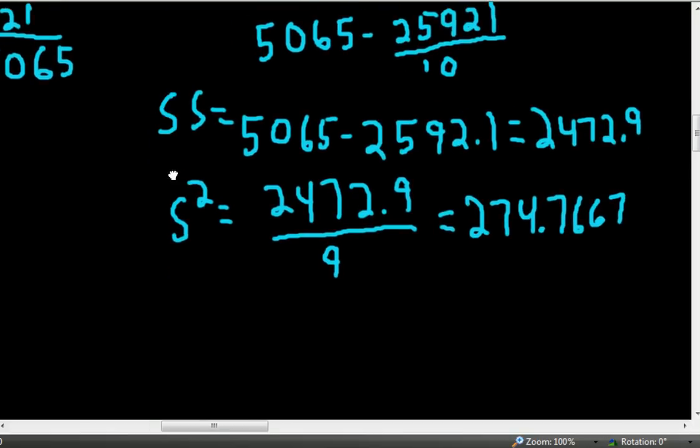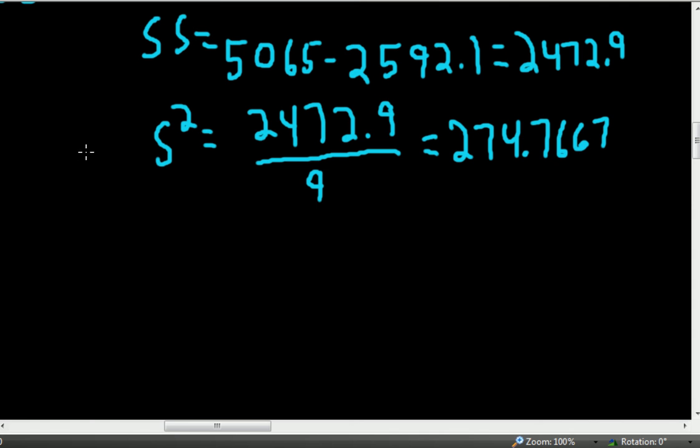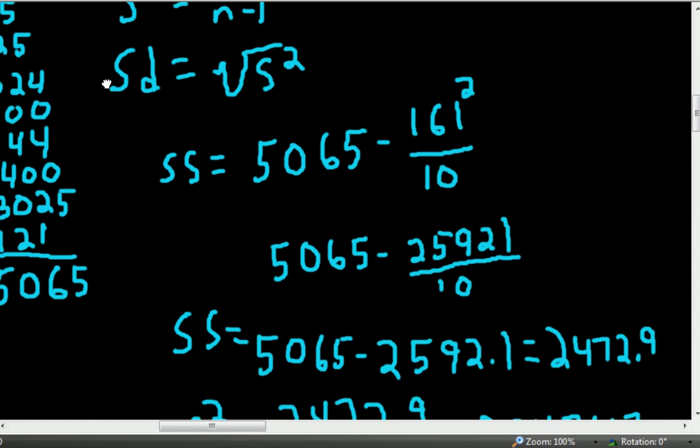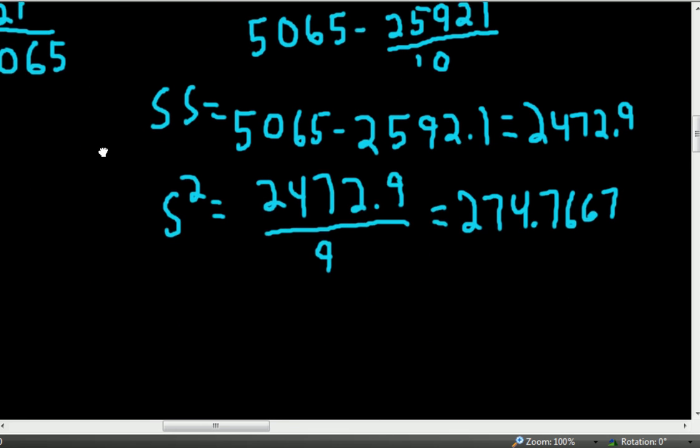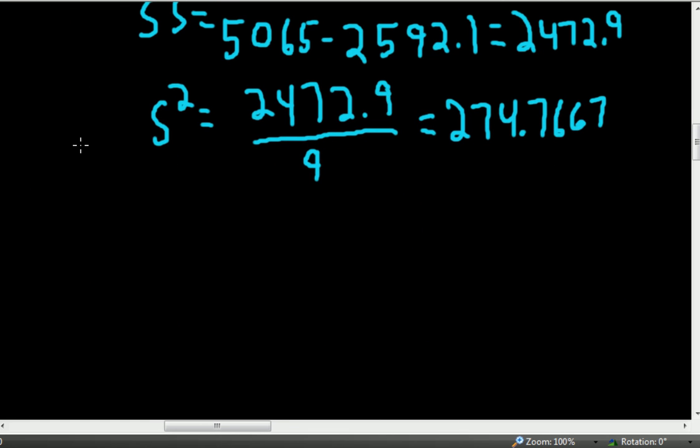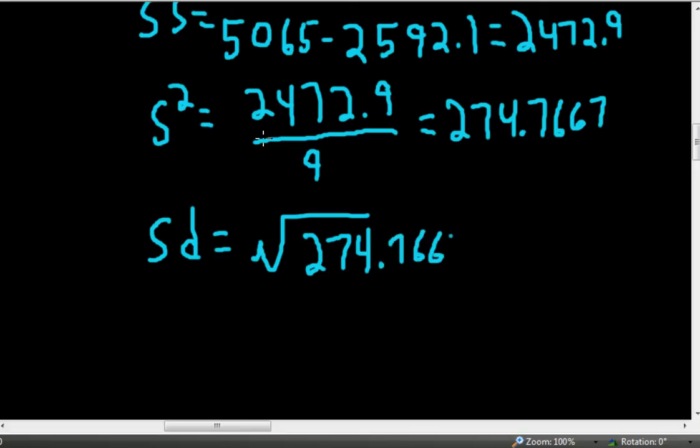And finally, we probably want to get the standard deviation. So to get the standard deviation from the variance, as we saw before, we simply take the square root of the variance. We want the standard deviation, which is sometimes symbolized with an S, but I'll go ahead and throw a D on there. We take the square root of 274.7667 and we get 16.58.